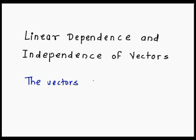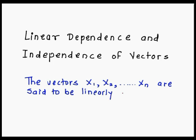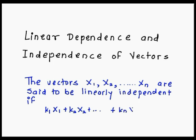Now we see the definition. The vectors x1, x2, x3 and so on, xn are the vectors and we need to check whether they are dependent or not. These vectors are said to be linearly independent if we write this in the linear combination of k1*x1 plus k2*x2 plus k3*x3 and so on, kn*xn is equal to 0 vector, and if we get all ki values — that is k1 = 0, k2 = 0, k3 = 0, kn = 0 — then we say that these vectors are linearly independent.